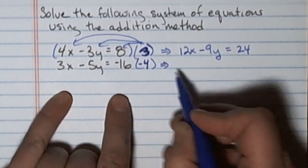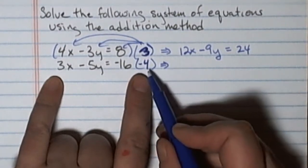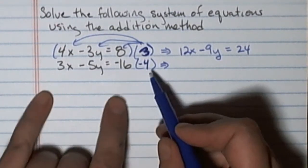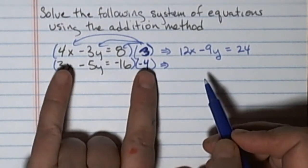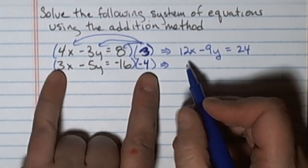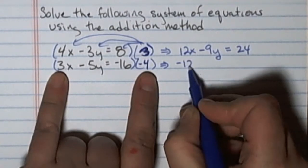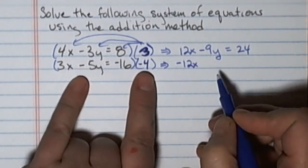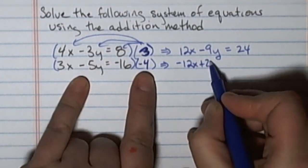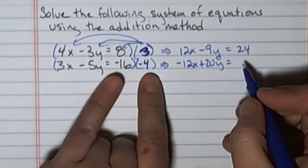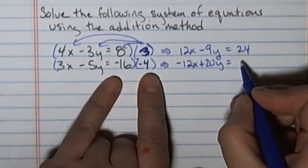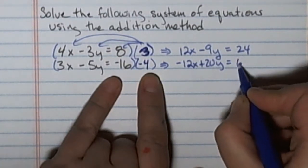On the bottom equation I'm getting an equivalent equation by multiplying everything by negative 4, so each term by negative 4. Negative times positive is negative, so I get negative 12x. Negative times a negative is positive 20y. And negative times negative is positive, and 4 times 16 is 64.